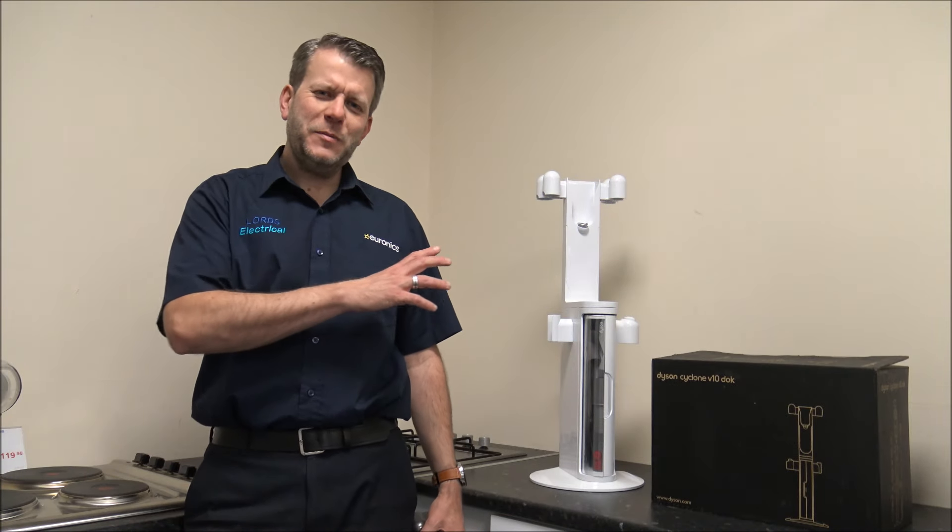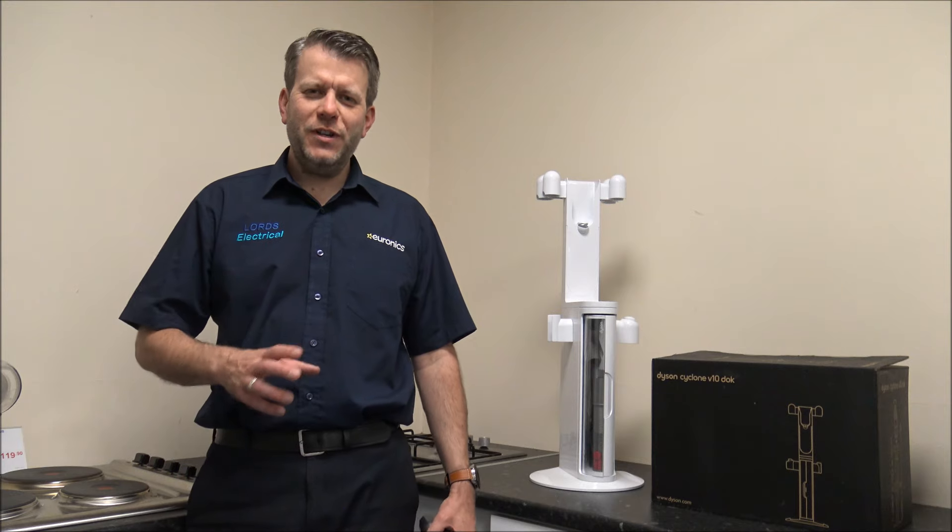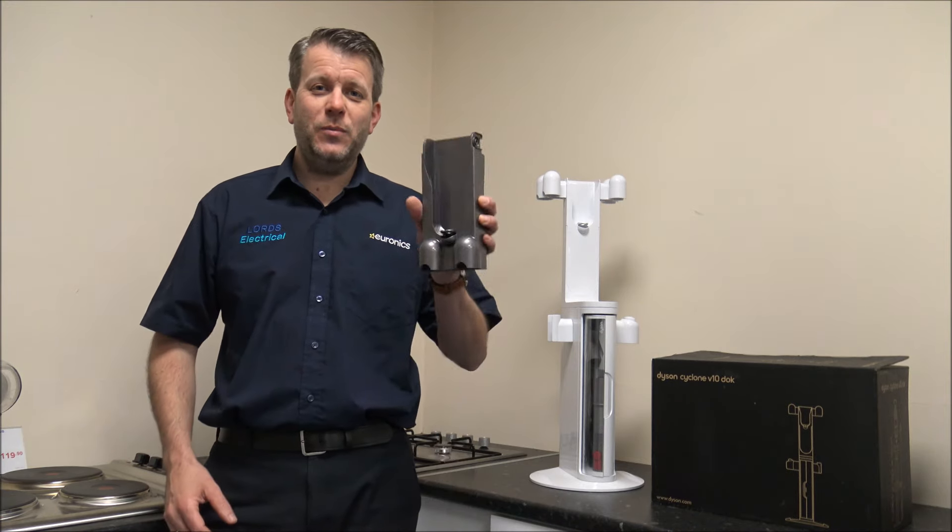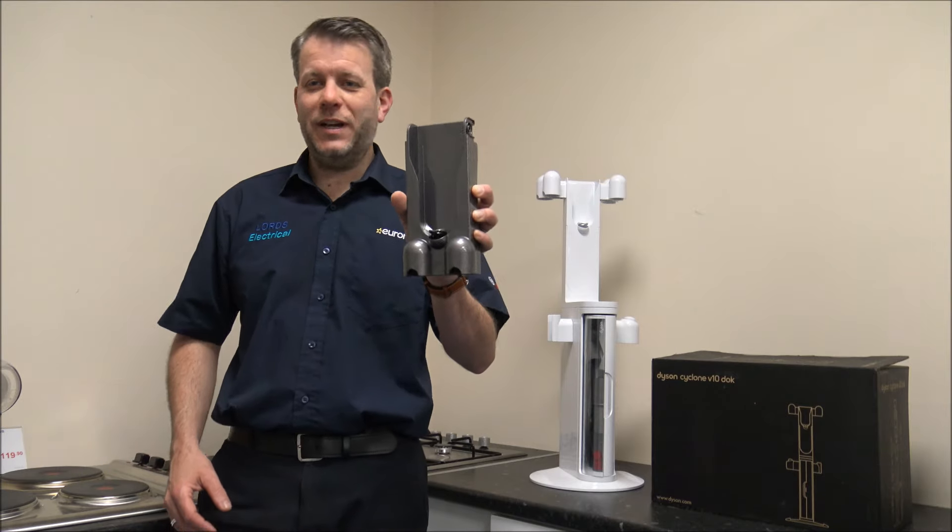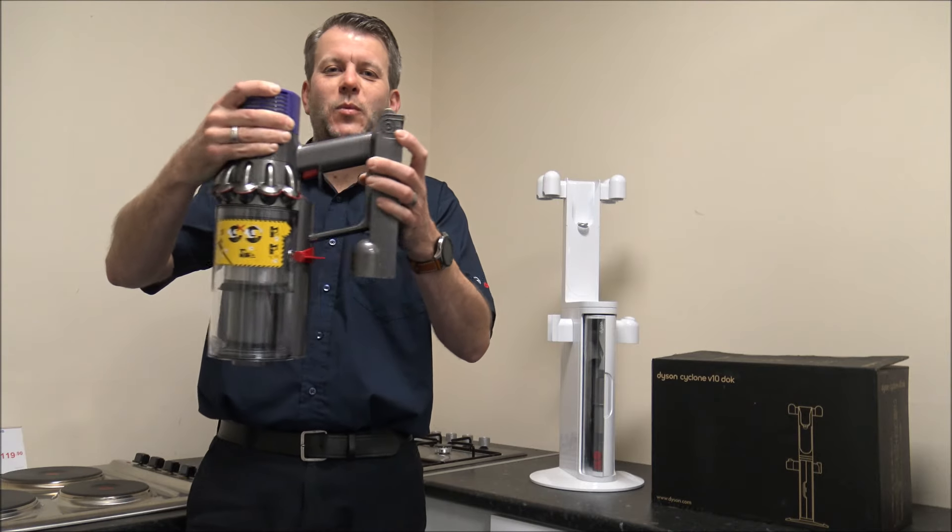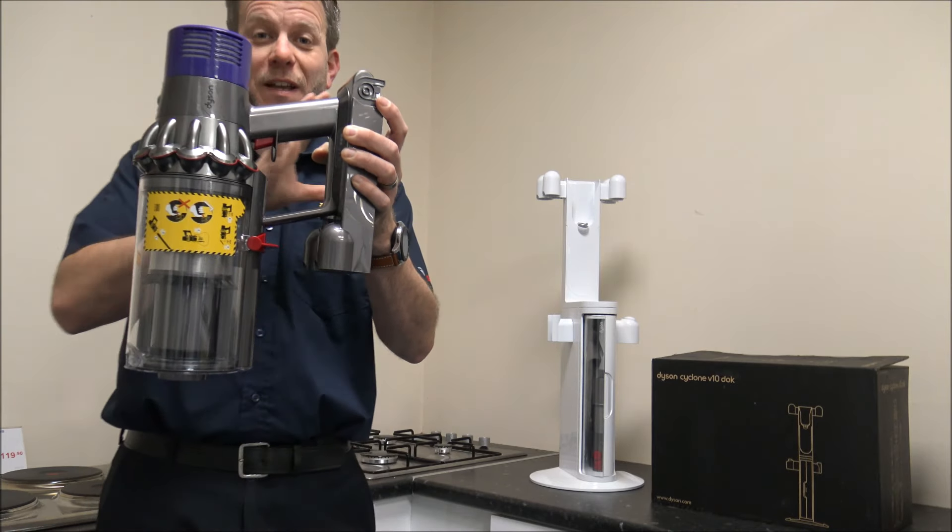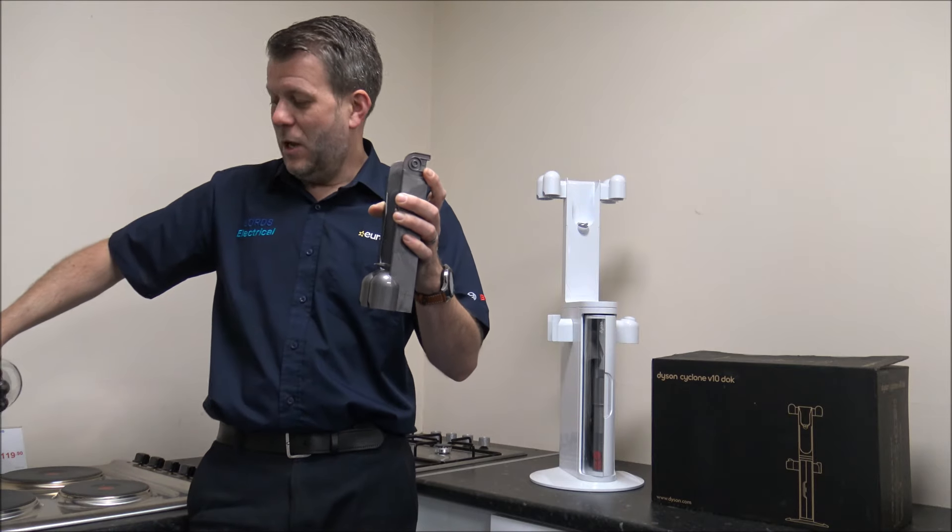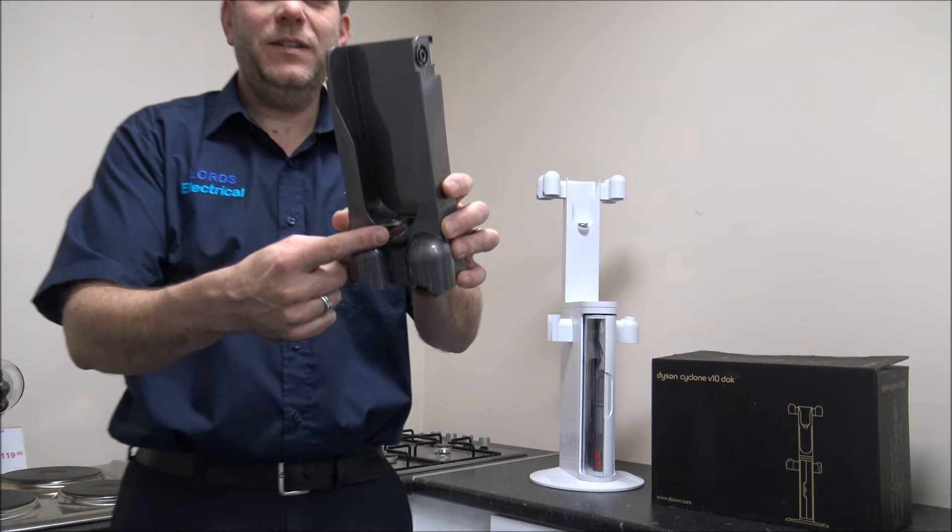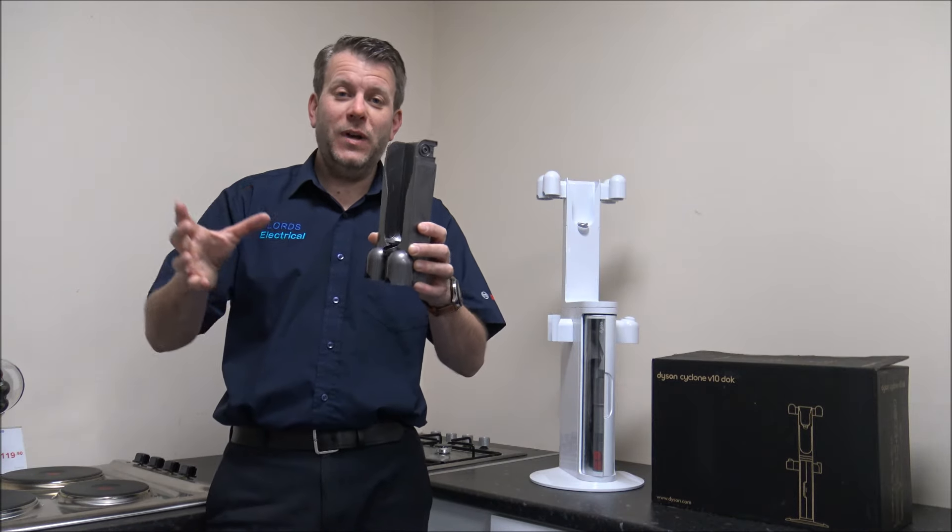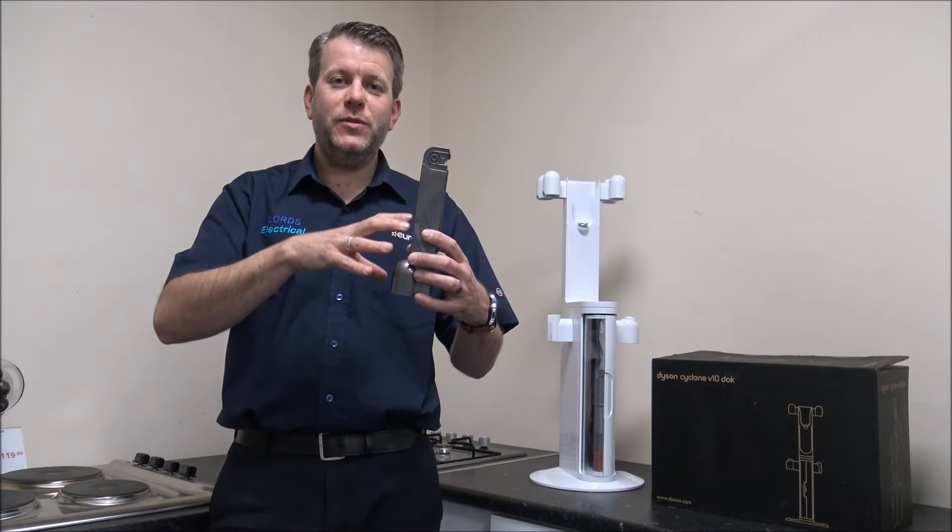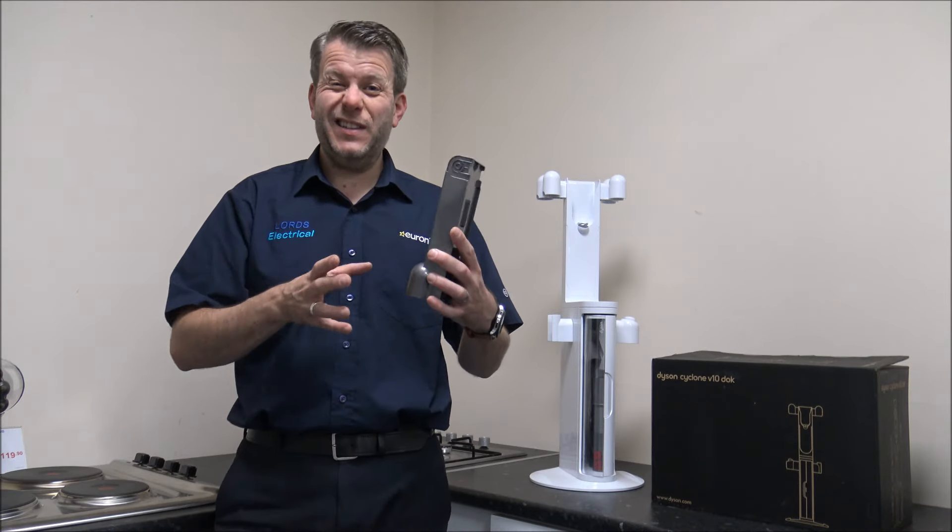So first of all I'd explain what the dock is and what it's all about. Traditionally with a Dyson cordless vacuum cleaner, a lot of the models come with a wall bracket. The idea is that the model will sit within the wall bracket, and you can put the charger within the bottom so that whenever you've got the vacuum cleaner stored on the wall, it's charging so that every time you go to it, it's fully charged, which I think is a brilliant idea.